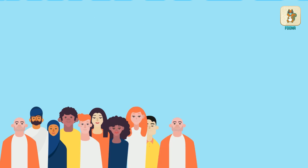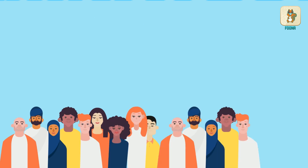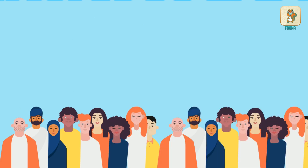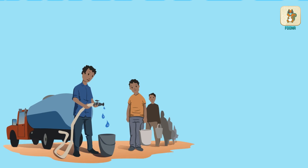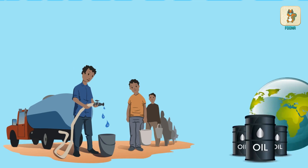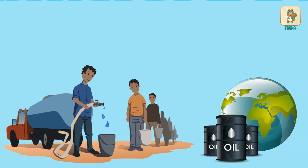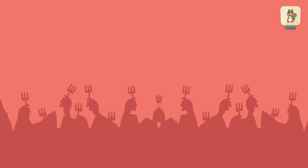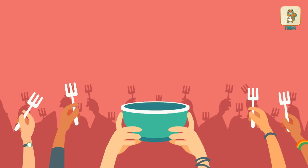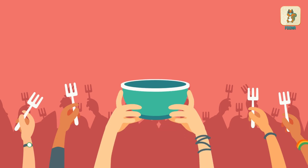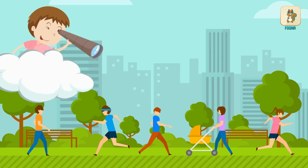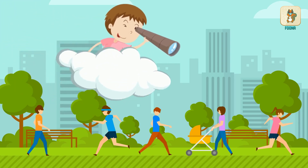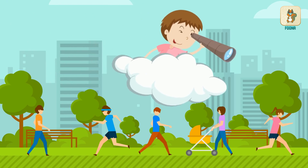Overpopulation is a major problem. It causes a strain on natural resources like fresh water and fossil fuel, and leads to food shortage too. Can you find out the population of your city?